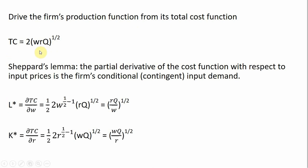I'm going to take two partial derivatives of the cost function — one with respect to the wage, the other with respect to R, the rental rate of capital. The first result is the conditional input demand for labor, or the long-run conditional input demand for labor. Taking the partial derivative of cost with respect to the wage, we get W raised to the 1-half power, so that brings down the 1-half. The 2 is still here, and W is raised to the 1-half power from the derivative, then we subtract 1 from the exponent, and nothing changes with the R and Q terms. Simplifying, the 1-half and 2 cancel, and W to the minus 1-half moves into the denominator.